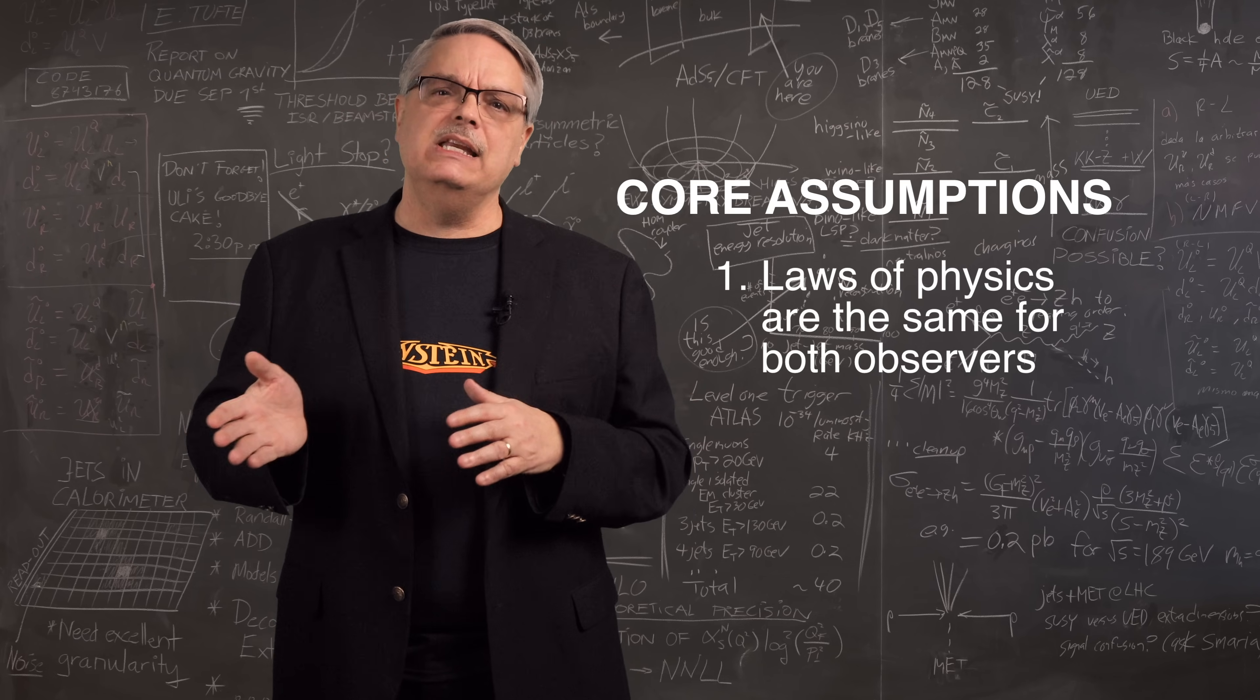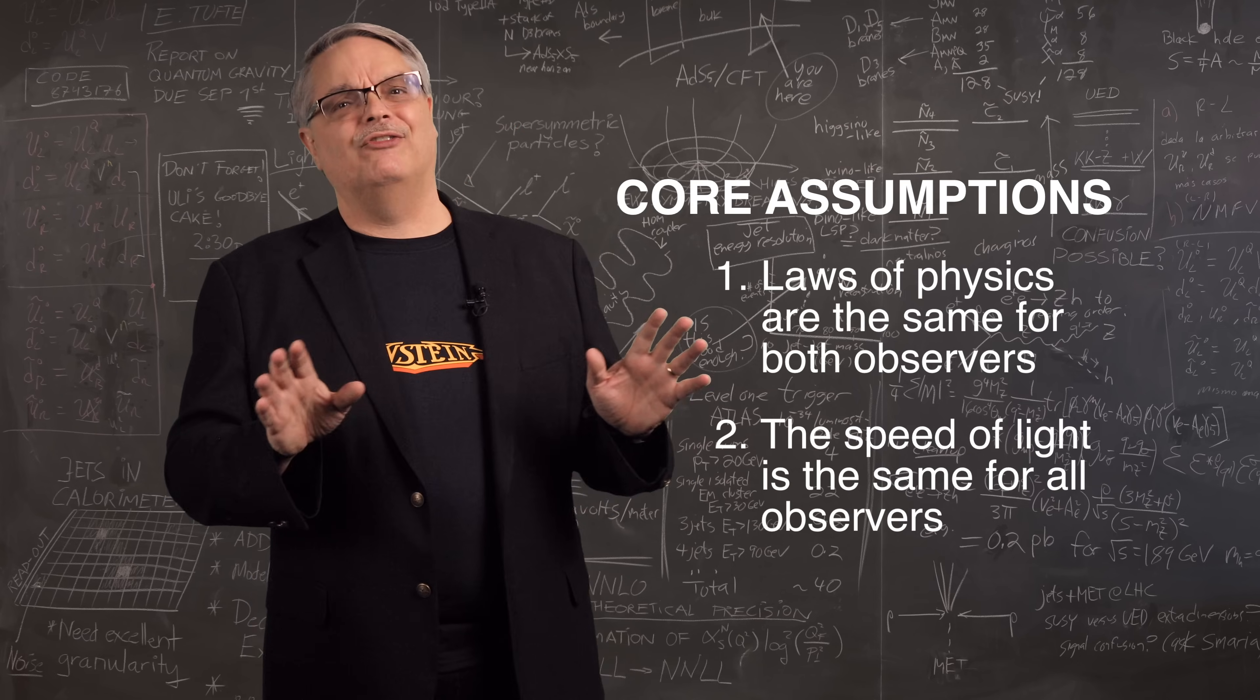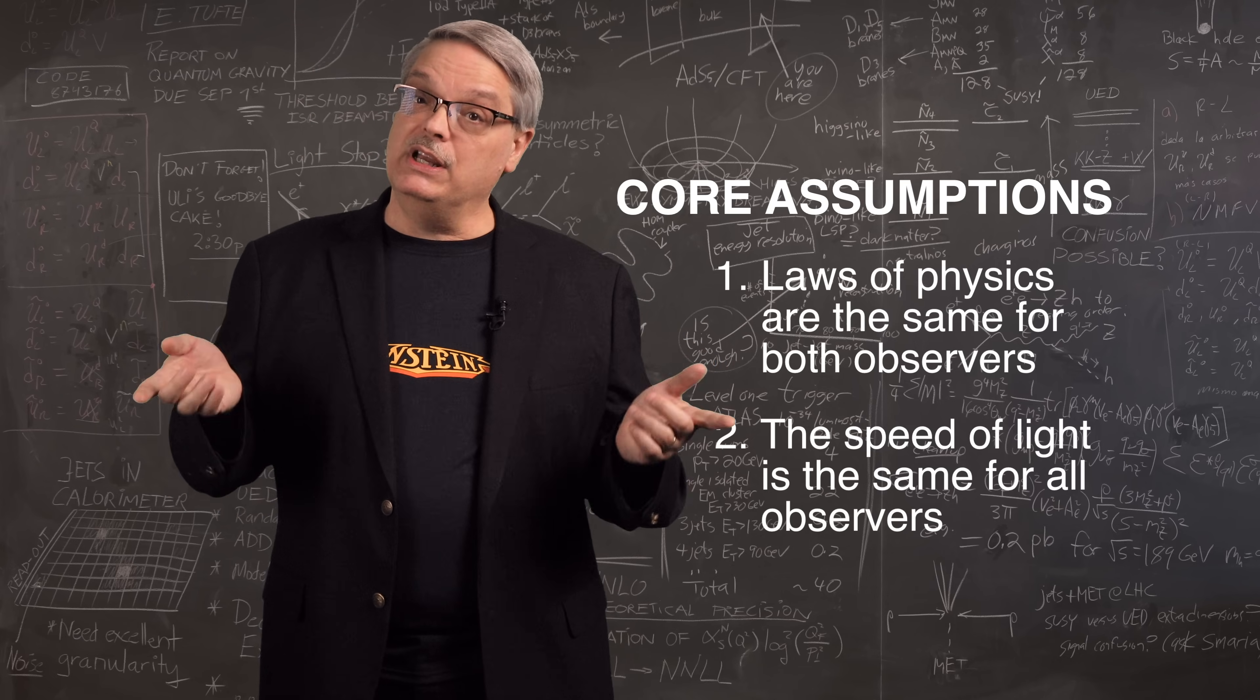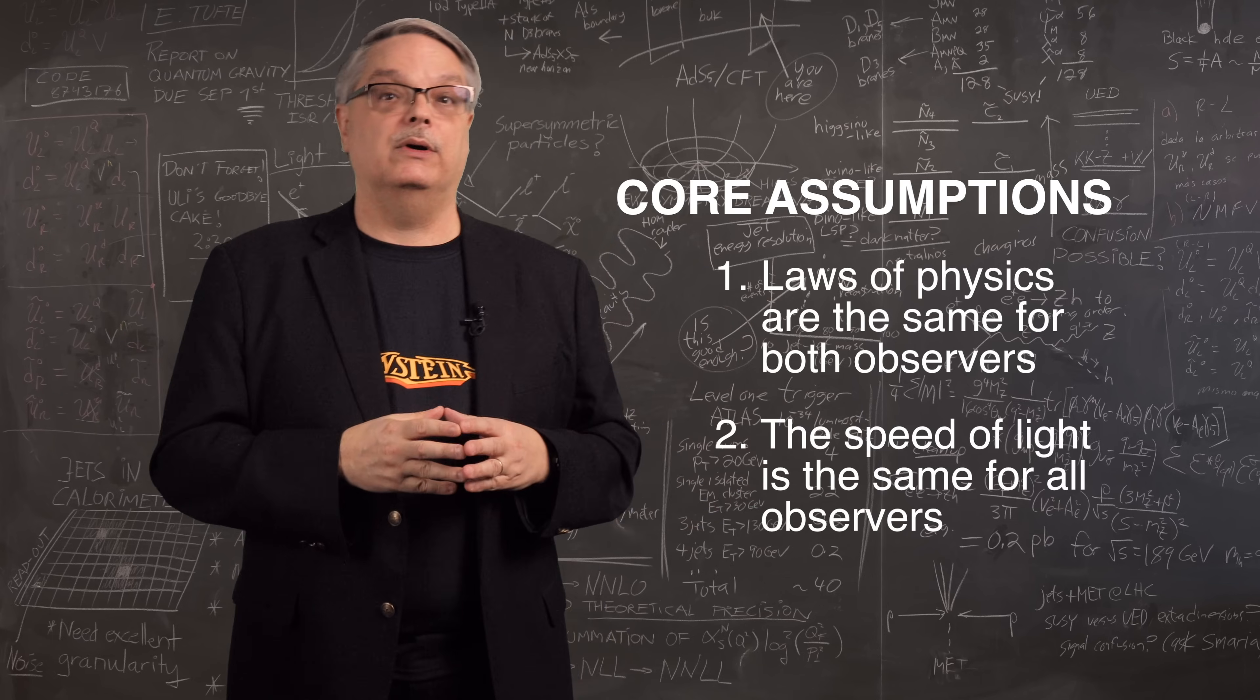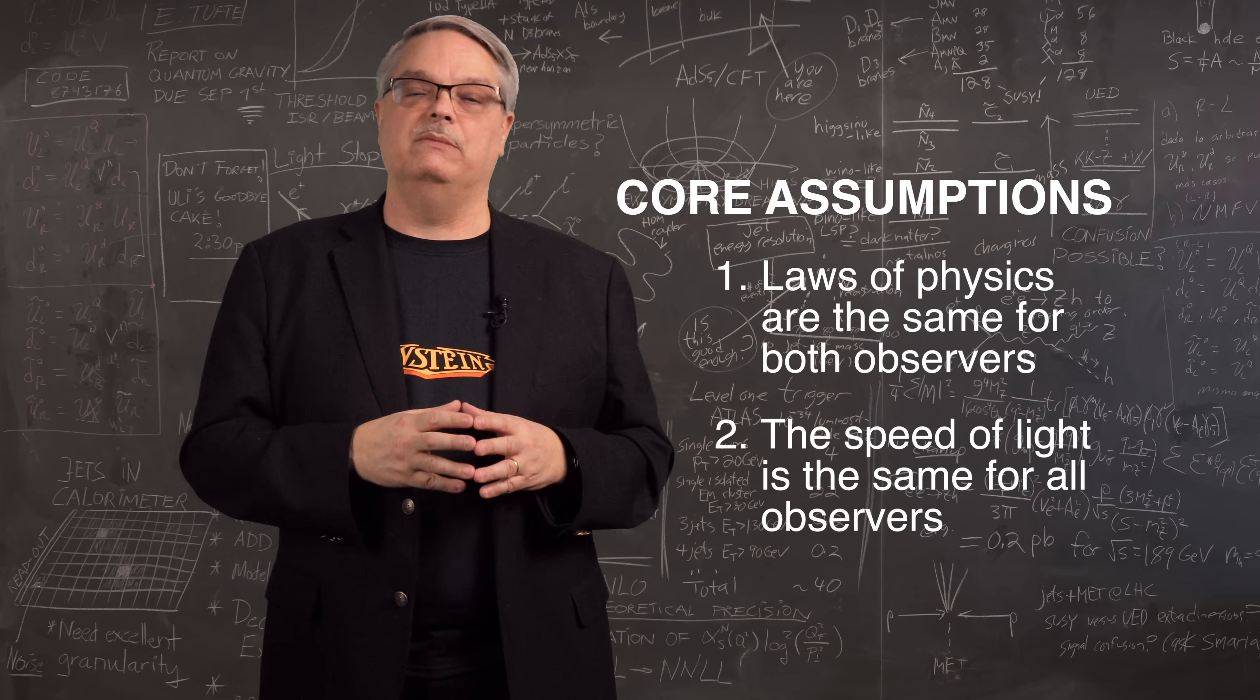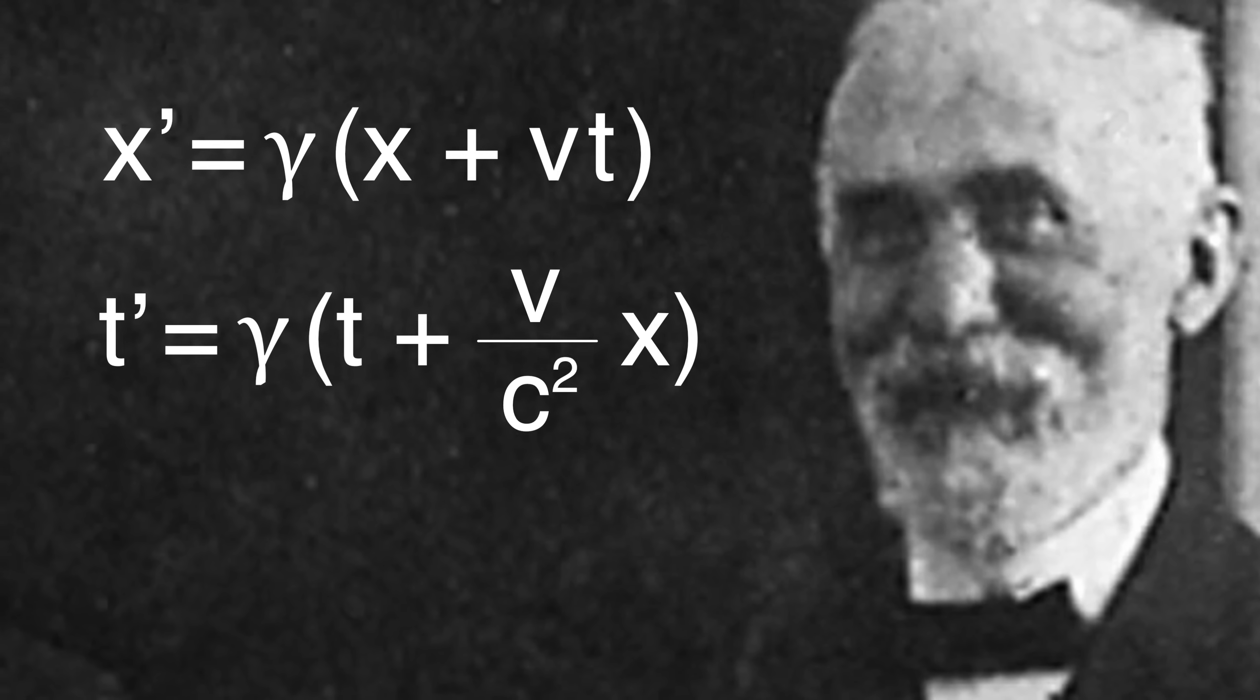The thing that is unique to Einstein is that he said the speed of light was the same for all observers. This flies in the face of common sense. After all, if you have two cars moving in opposite directions at 60 miles an hour on the highway, their closing speed is 120 miles per hour. But that's not how it is for light. Everybody sees the same speed. If you take these two assumptions, you can derive Einstein's transformation equation.